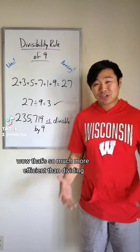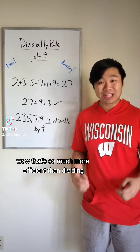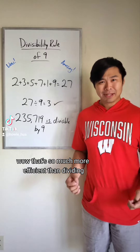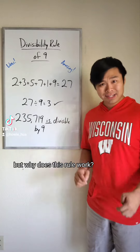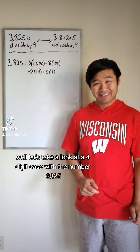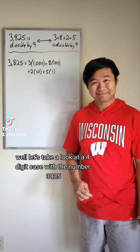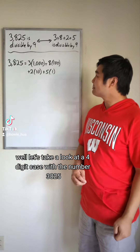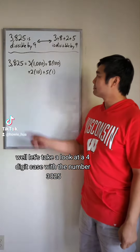Wow, that's so much more efficient than dividing — but why does this rule work? Well, let's take a look at a four-digit case with the number 3,825.